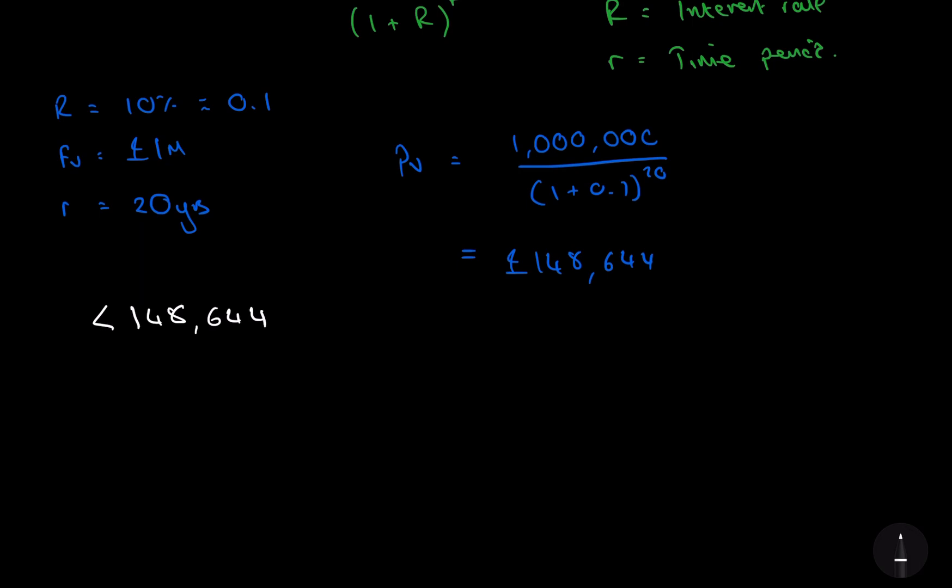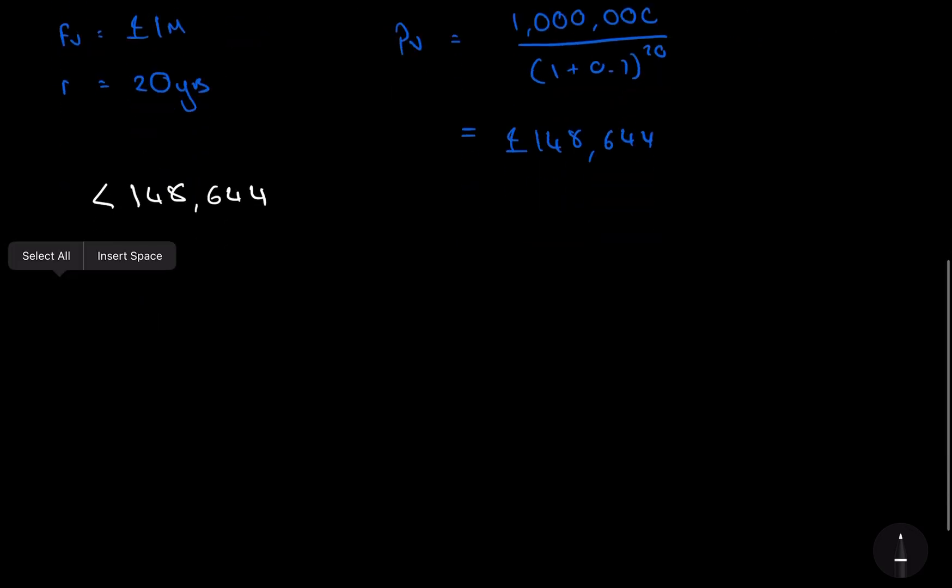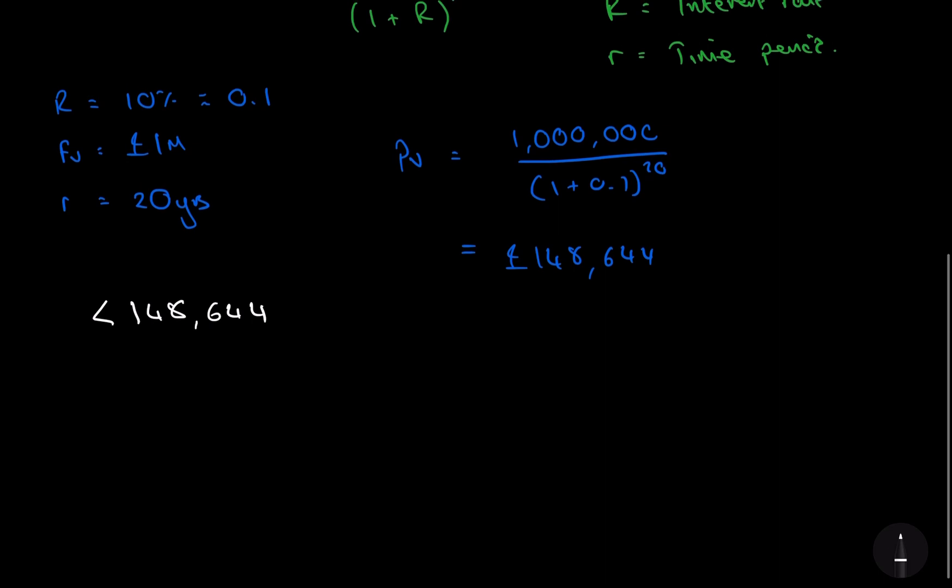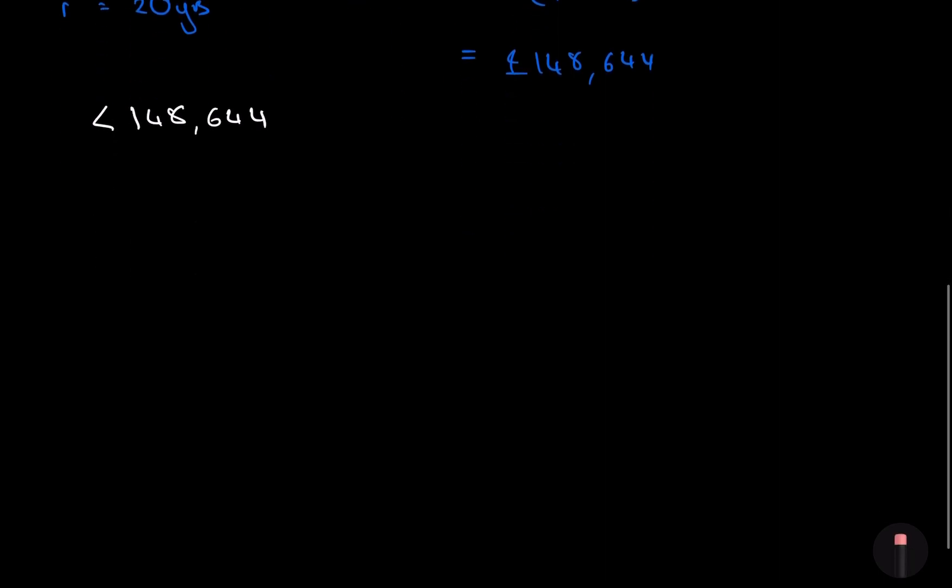And why is this? Well, let's talk about the counter first. If we were to pay more than £148,000, let's say we were to pay £160,000, so we paid £160,000 for this bond.